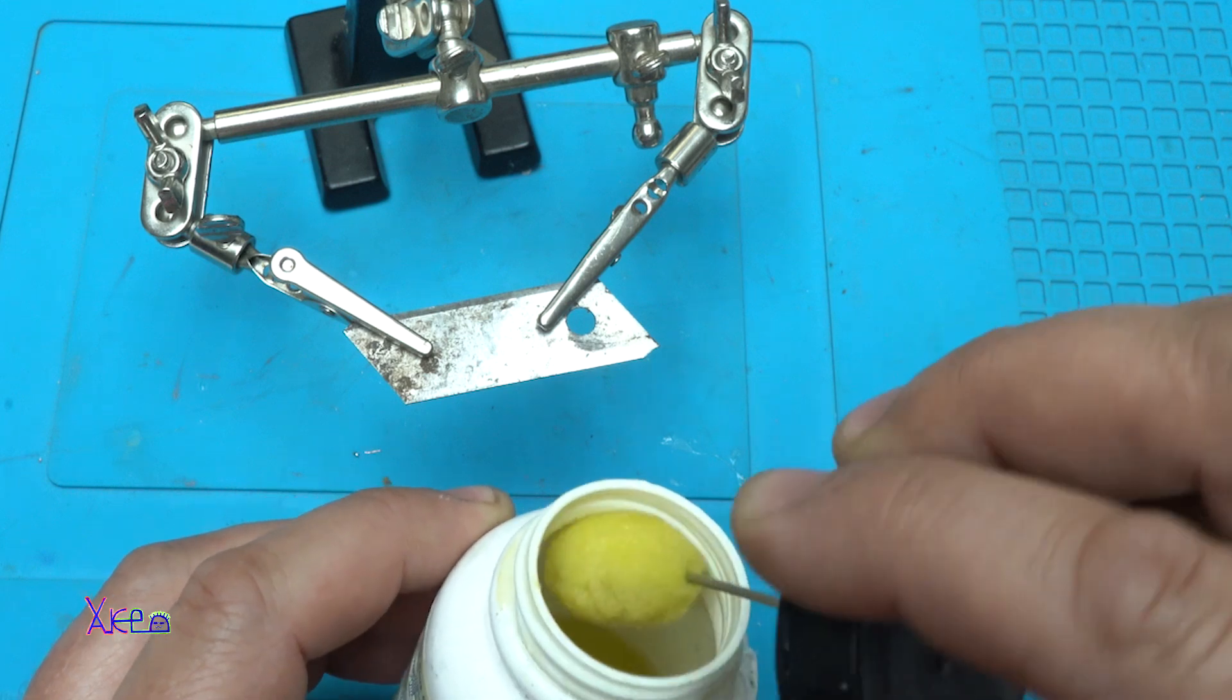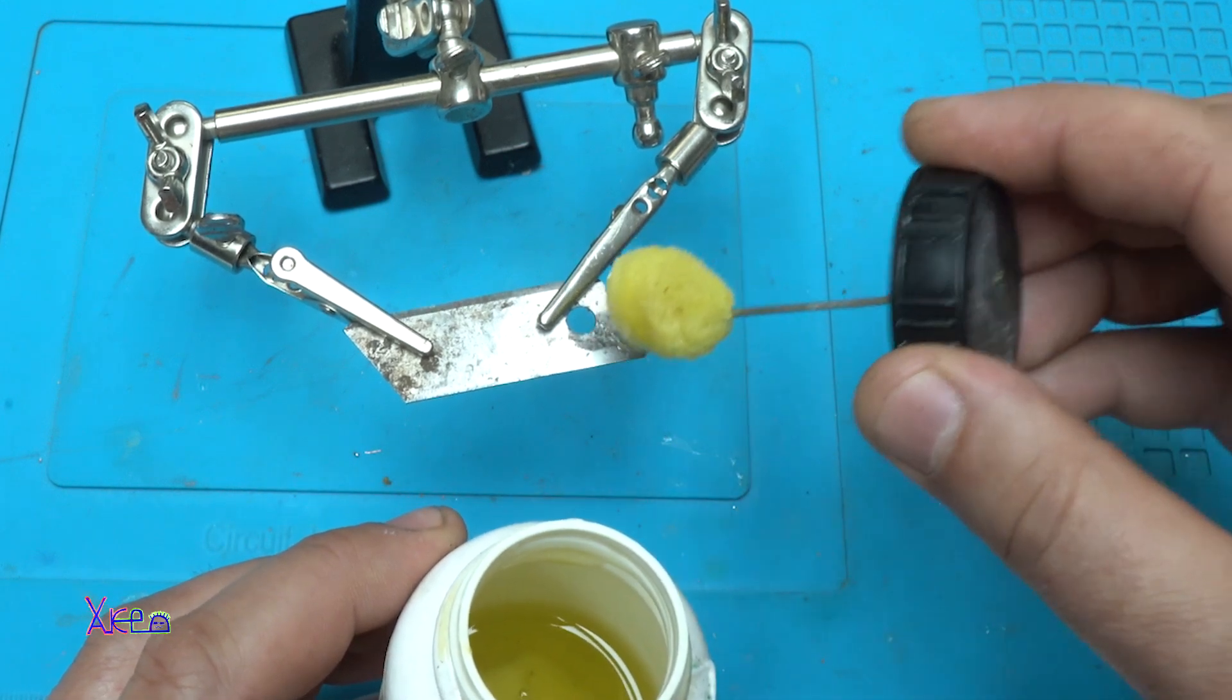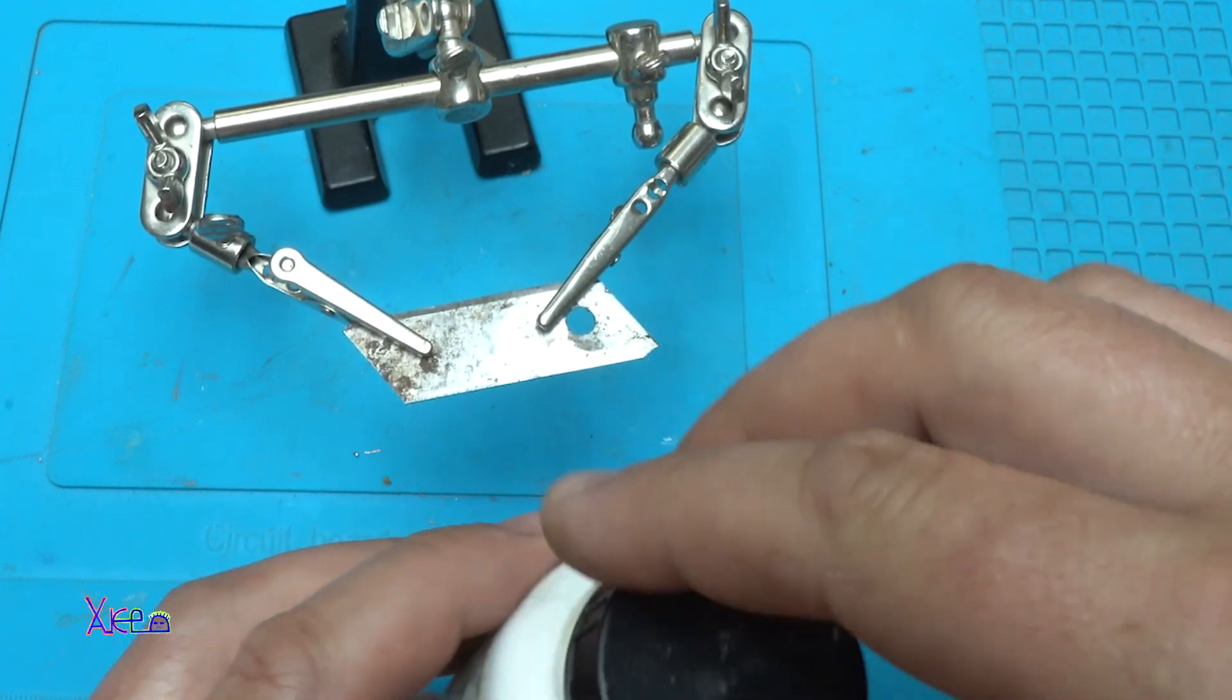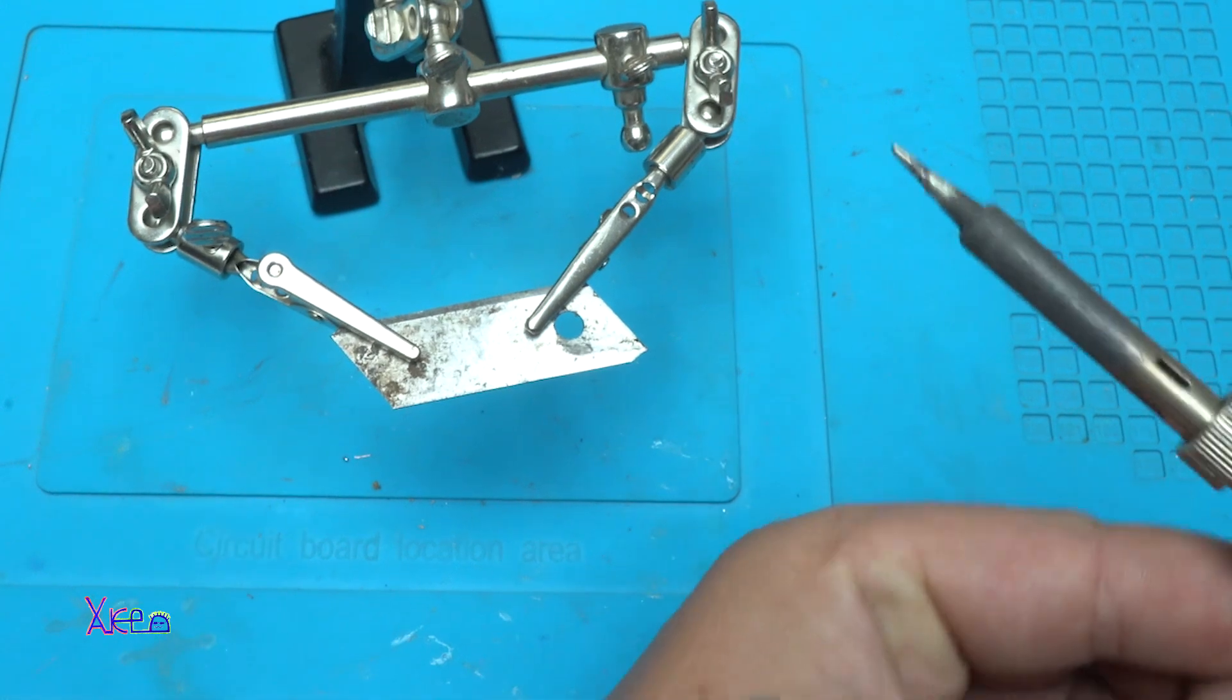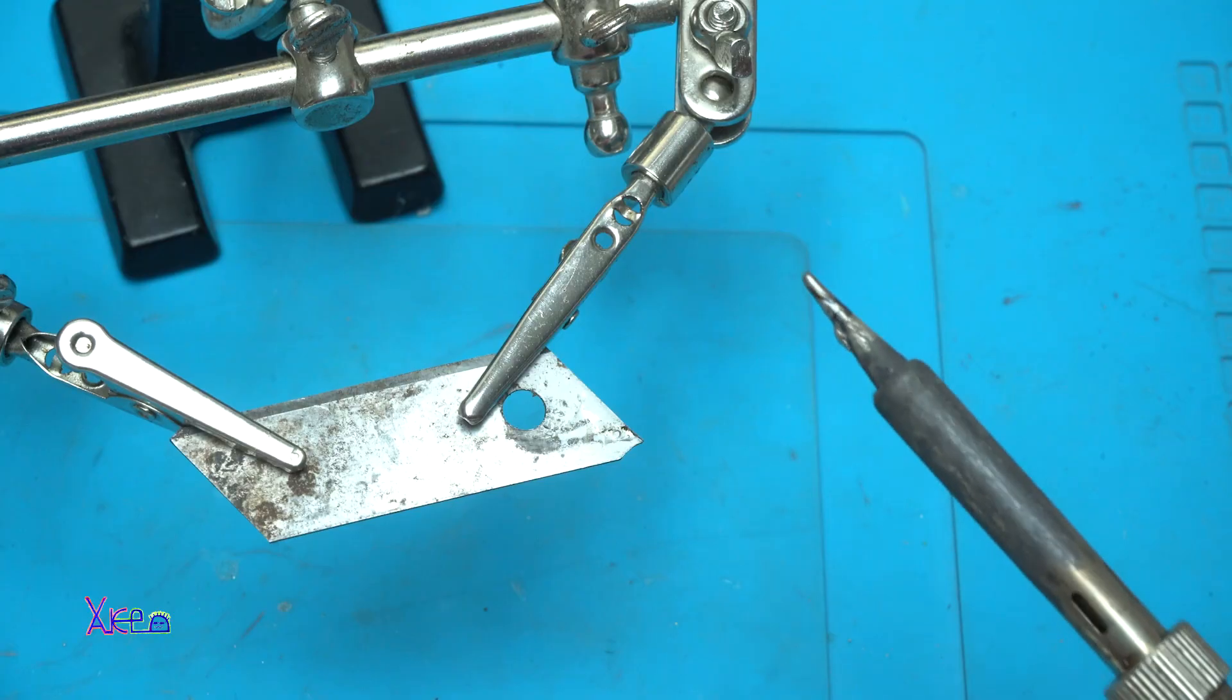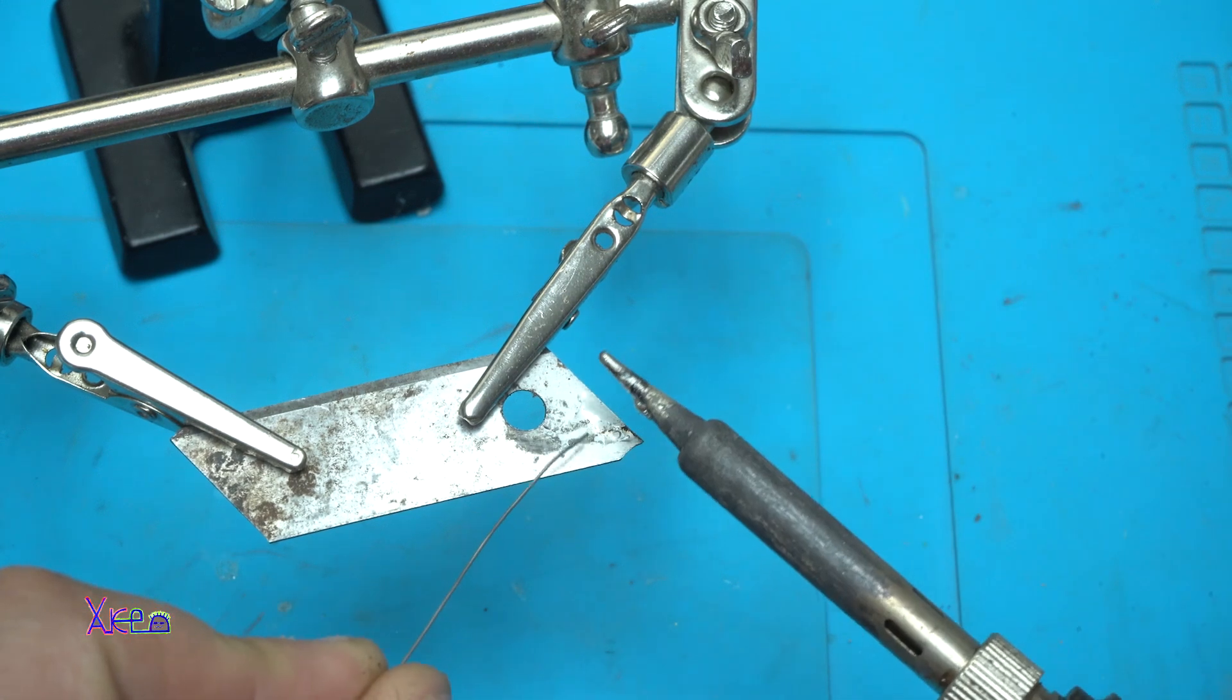Next is to add a very small amount of flux. And with the soldering iron, first you need to heat very well the surface of the metal piece.